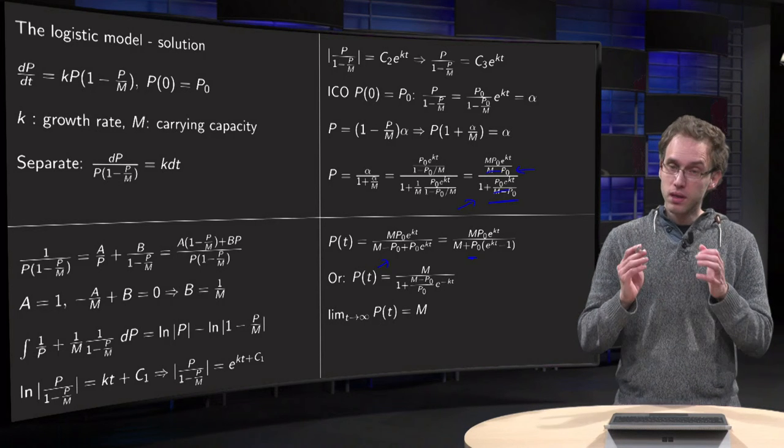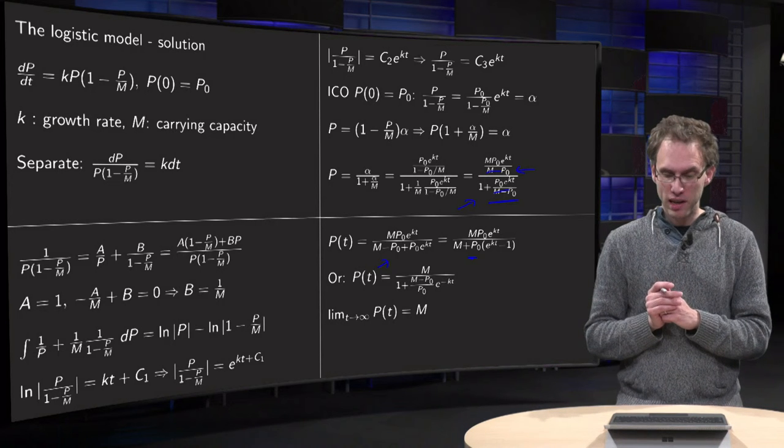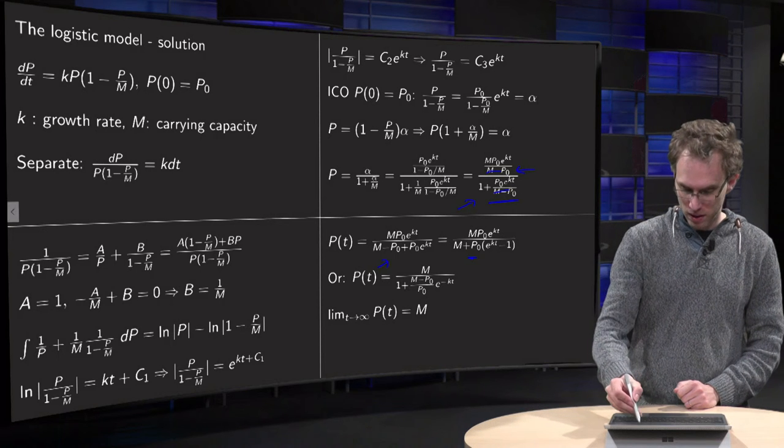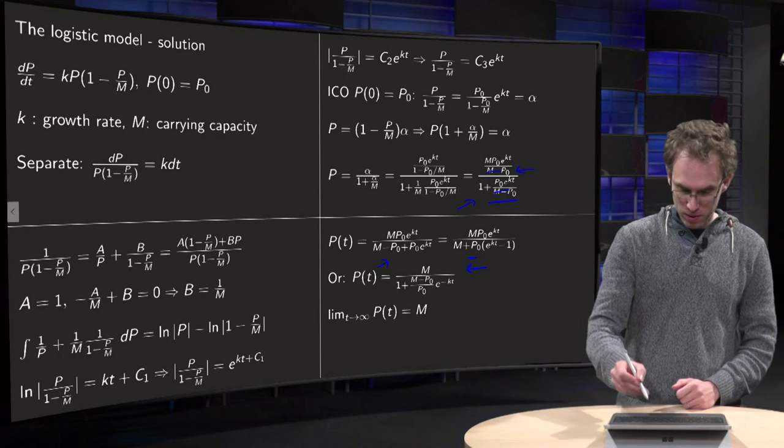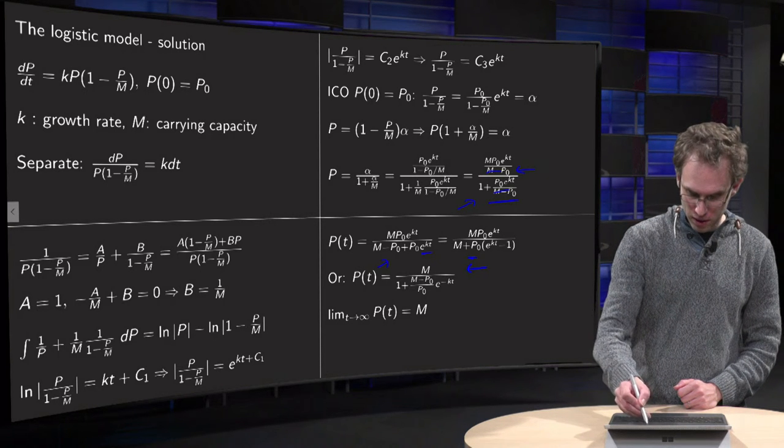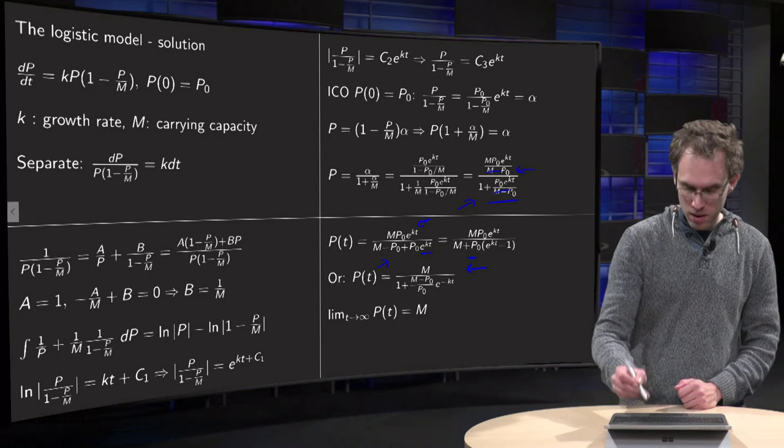So there you have your P of t slightly cleaned up, or alternatively you can write it like this. If you divide this expression over here by e to the power of kt.